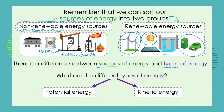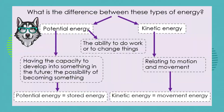We have two basic groups of energy: something called potential energy and something called kinetic energy. This is how we will see those sources of energy producing the ability to do work.